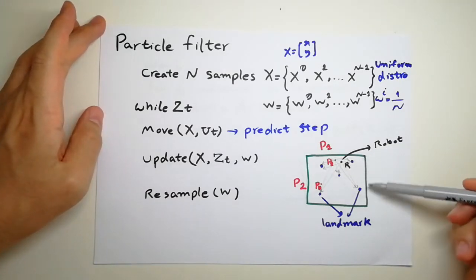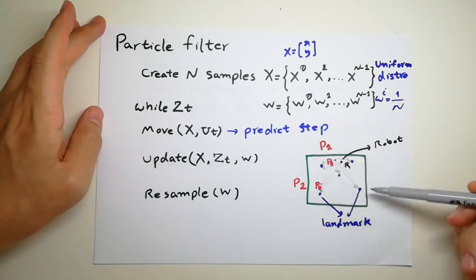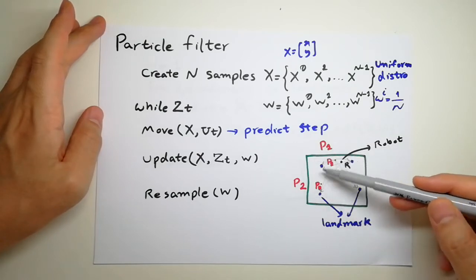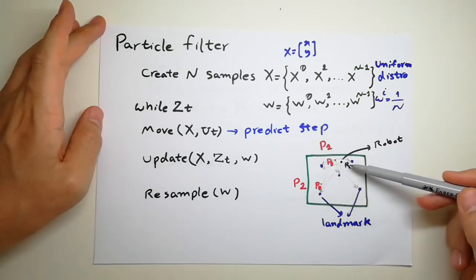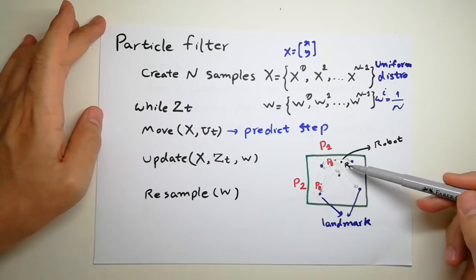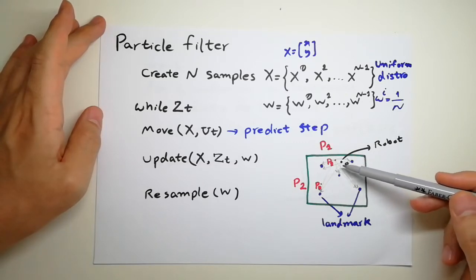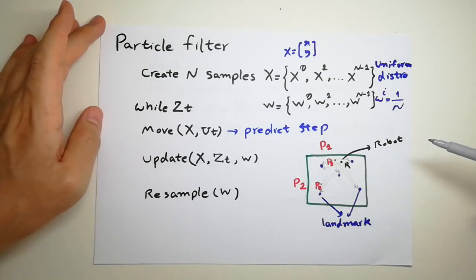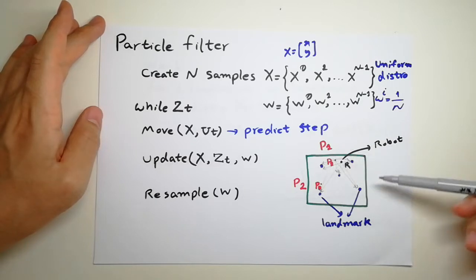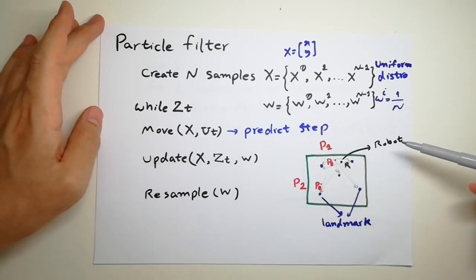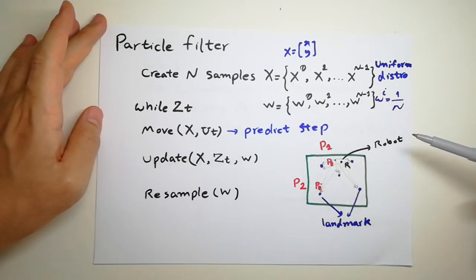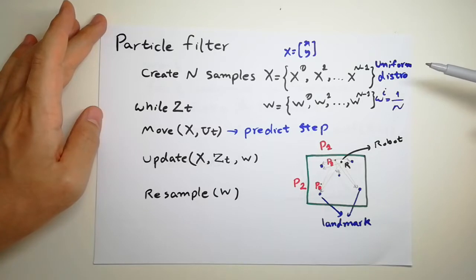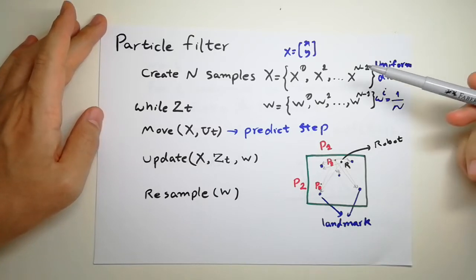This is my setup. I have a map like this — this is my environment. I have a bunch of landmarks that I can uniquely identify, and this is my robot. I can move the robot with the mouse. Please have a look at my code to see the setup and understand it better.